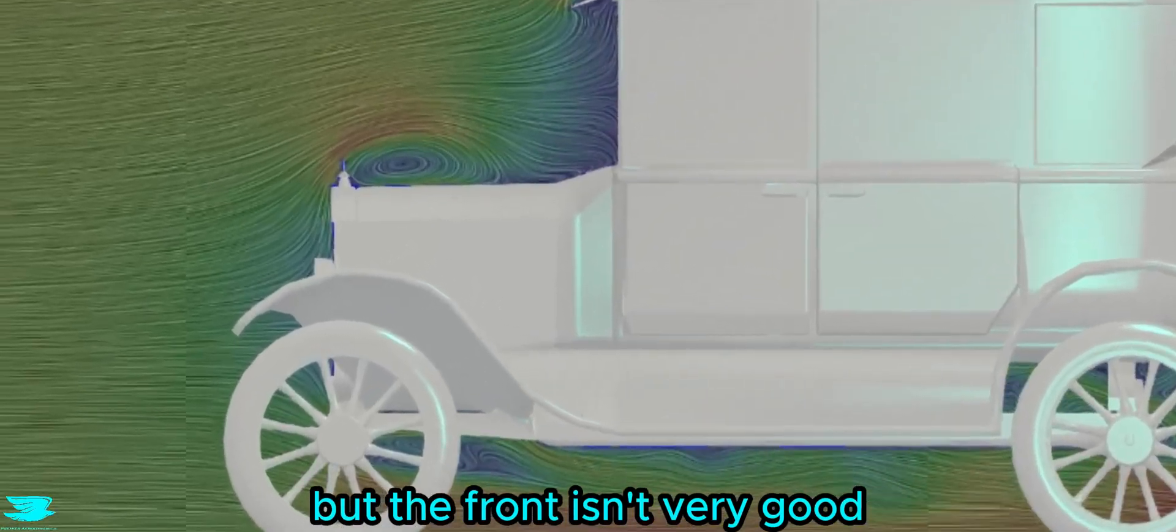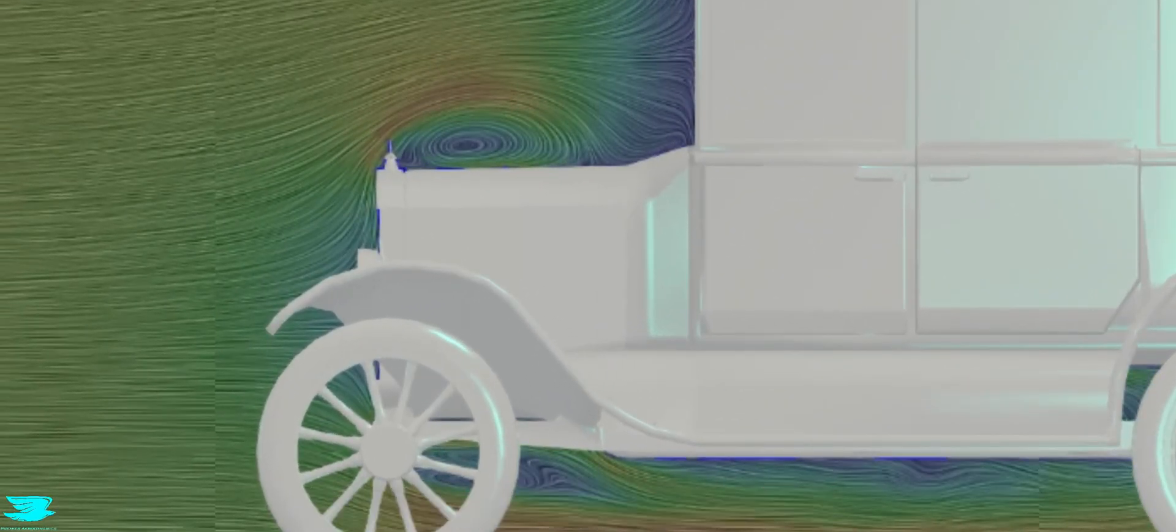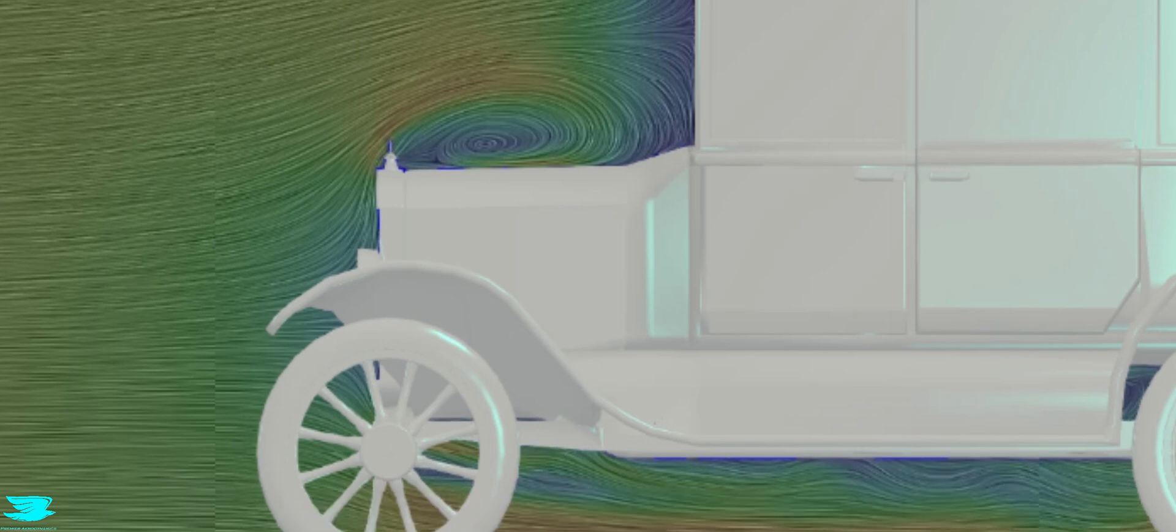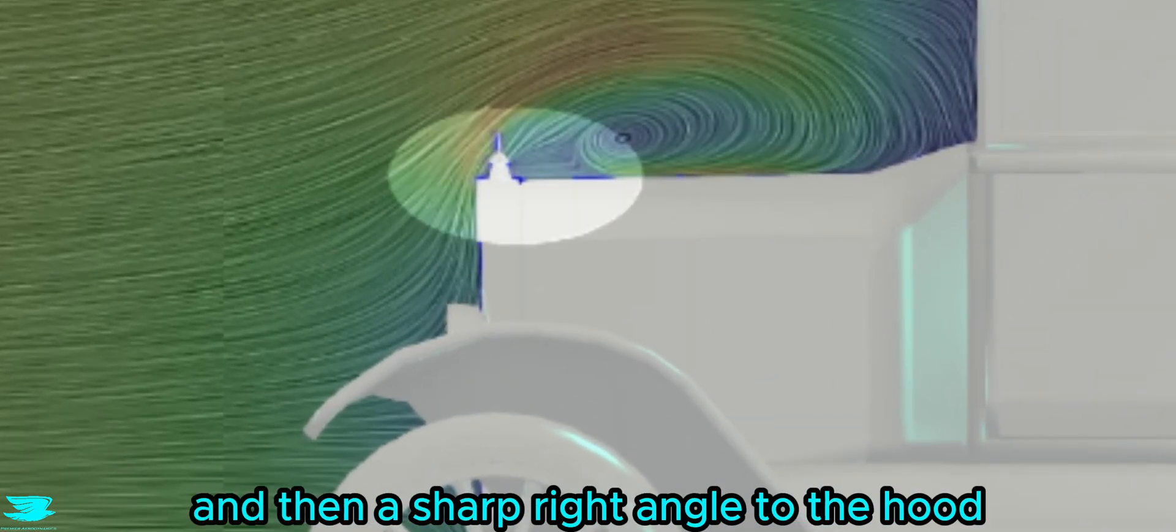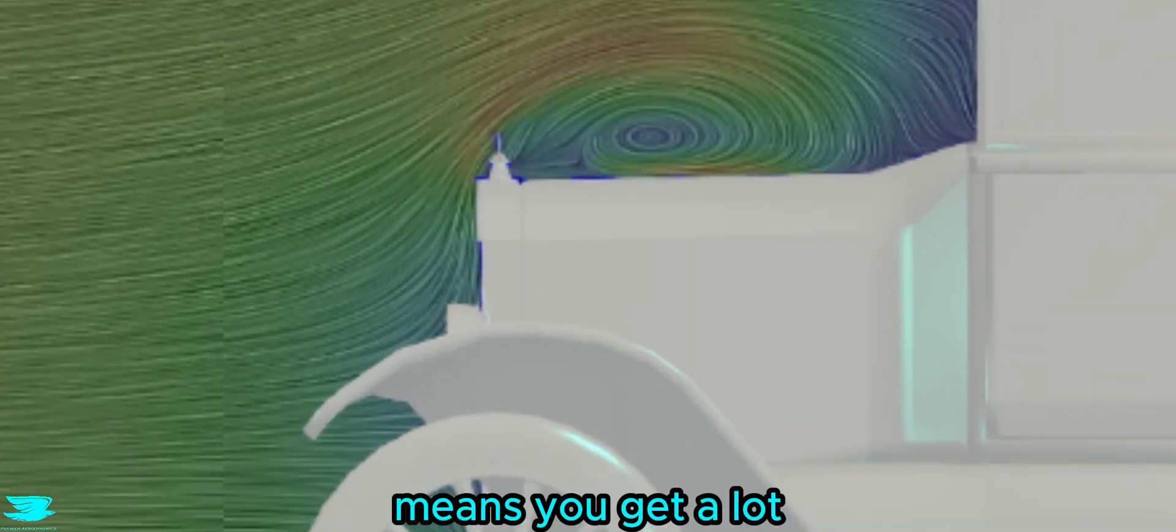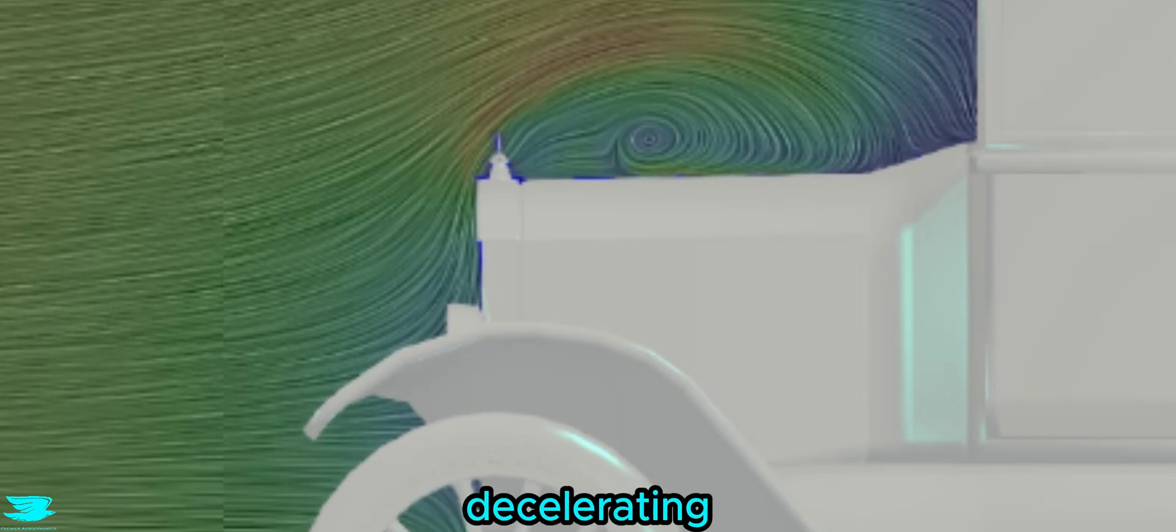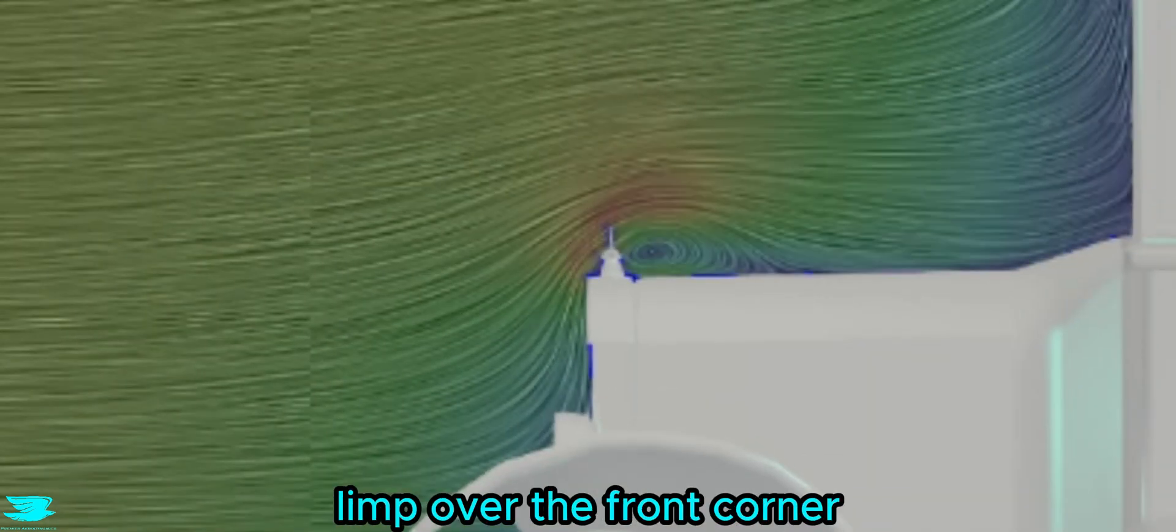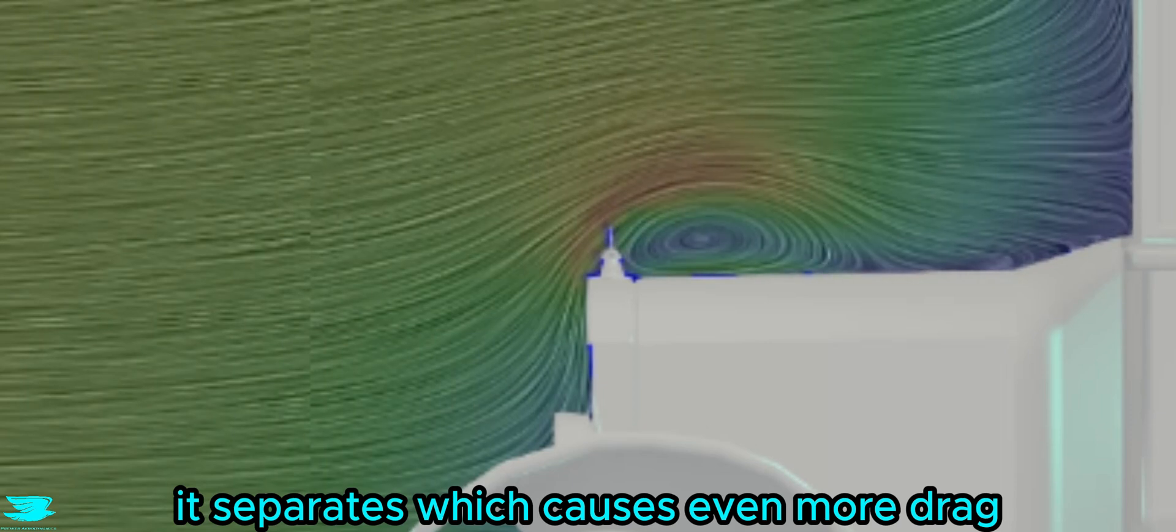But the front isn't very good because it is just too flat. Again, they knew very little about aerodynamics back then, but from a modern perspective, having such a blunt front and then a sharp right angle to the hood means that you get a lot of flow hitting the front, decelerating, increasing the pressure there, which increases the drag. And then as it manages to limp over the front corner, it separates, which causes even more drag.